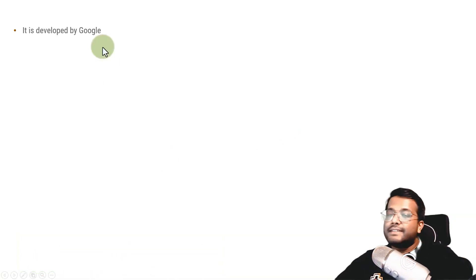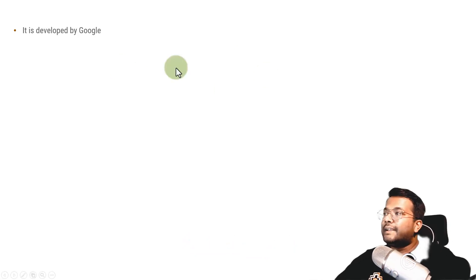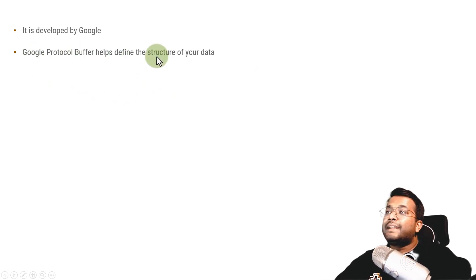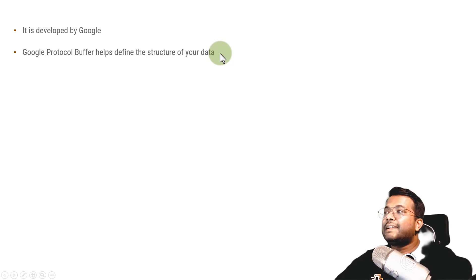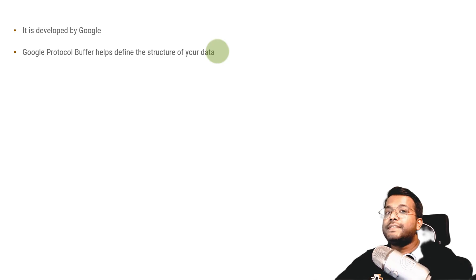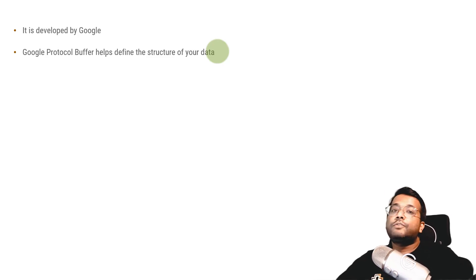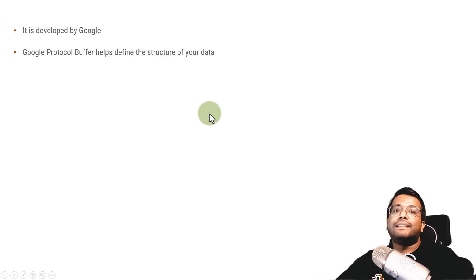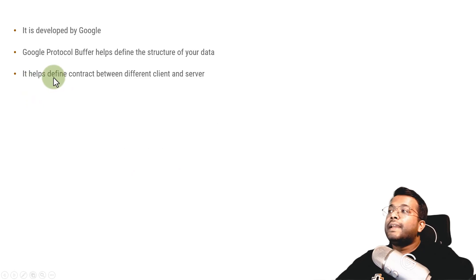Google Protocol Buffer was developed by Google. This particular framework, software, or protocol was developed by Google, and it helps you to define your structure. The most important thing it helps you with is the structure definition for your data — like you have JSON, from which you can define your data, and XML from which you can also define your data. Same way, Google Protocol Buffer helps you to define the structure of your data and the contract between the client and the server.